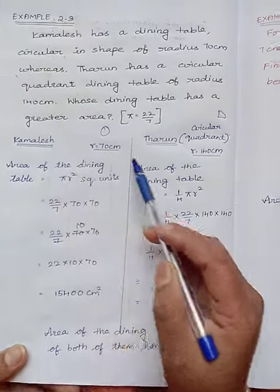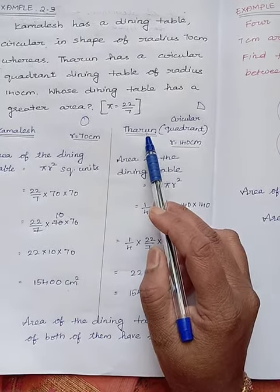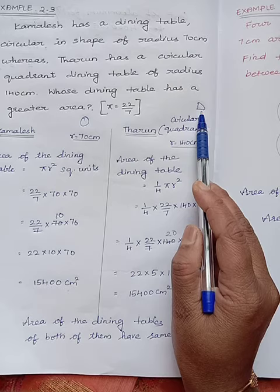So this is about Kamalesh. Now, let us see Tarun. The Tarun dining table shape is in the form of quadrant.